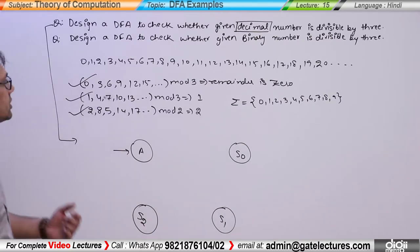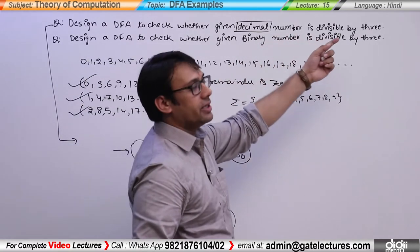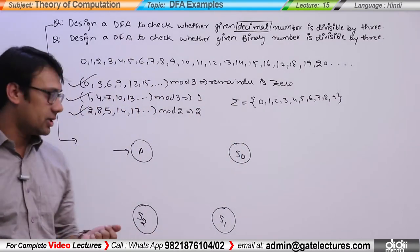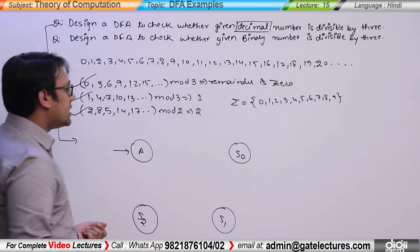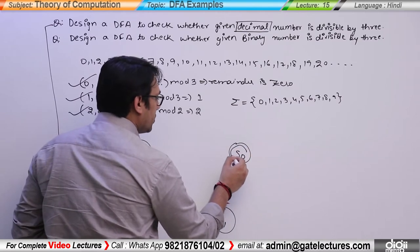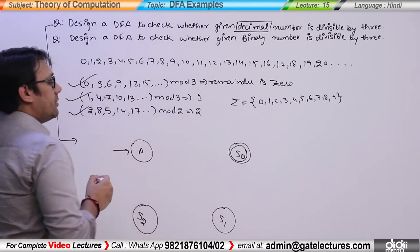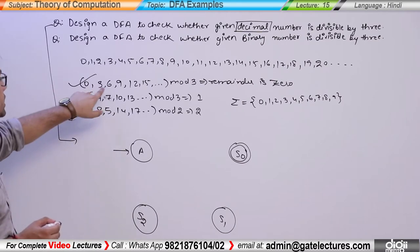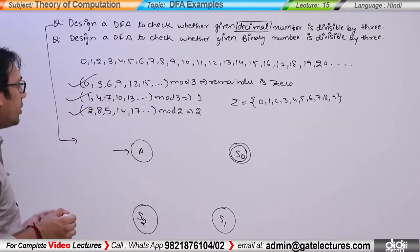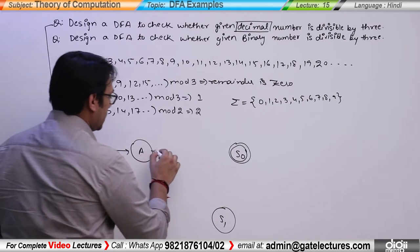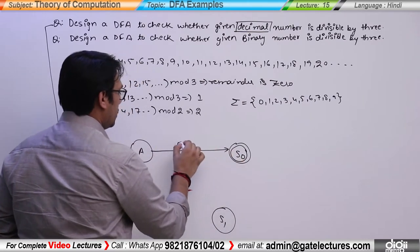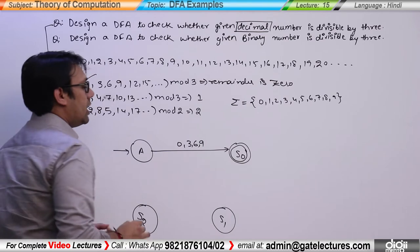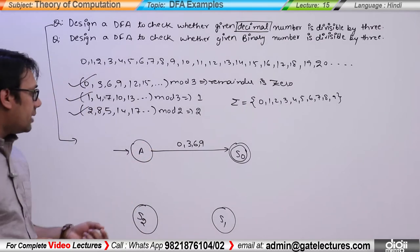If the number is divisible by 3 — numbers like 3, 6 — then you have to remember remainder 0. In this case, state S0 will be a final state. If you have input 0, 3, 6, and 9, then you have to remember remainder 0.